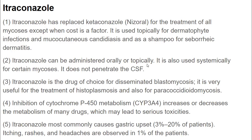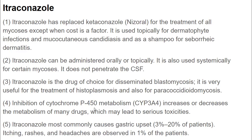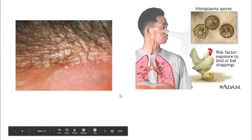Itraconazole can be administered orally or topically. It is also used systemically for certain mycoses. It does not penetrate the CSF. It is the drug of choice for the treatment of disseminated blastomycosis and is very useful for the treatment of histoplasmosis and paracoccidioidomycosis. Inhibition of cytochrome P450 metabolism increases or decreases metabolism of many drugs, which may lead to serious toxicities. It most commonly causes gastric upset in 3-20% of patients; itching, rashes, and headache are observed in 1% of patients.